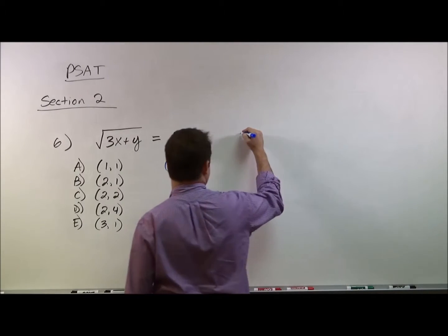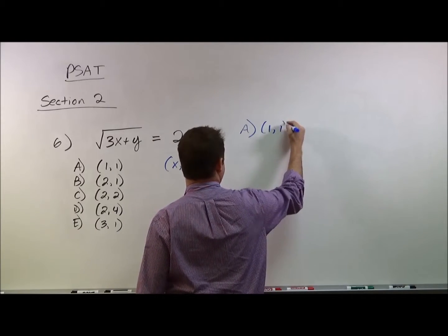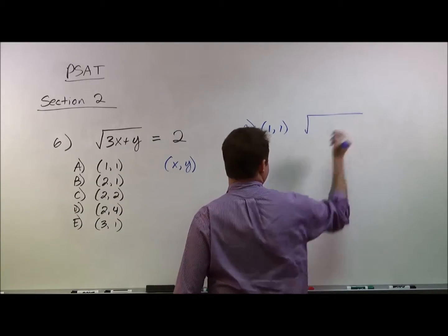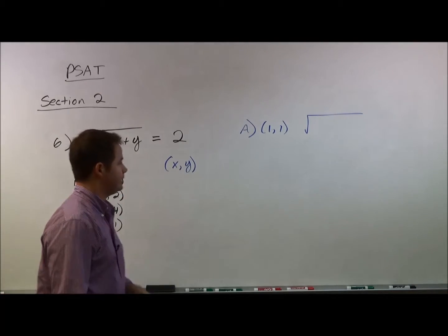So if we were to test out answer choice A, for example, it's 1, 1 for the coordinate, which means when we go to plug that into this original equation, we're plugging in a 1 for x and a 1 for y.